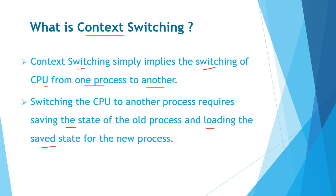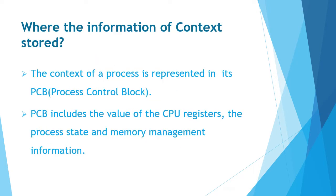Context switching is very important in multitasking operating systems. The information of context is stored in the PCB of a process, that is the process control block. PCB includes the value of CPU registers, the process state, and memory management information.